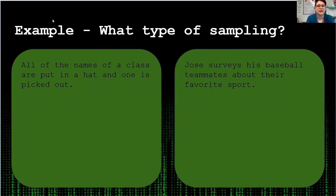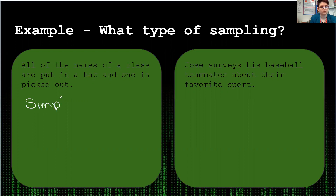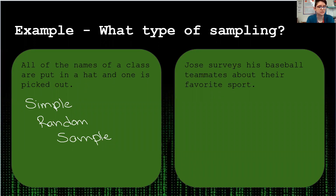Let's look at a few examples and determine what type of sampling was used. Our first example: all the names of a class are put into a hat and one is picked out. All the names of the class are represented, so the whole population is included. They're put into a hat and one is selected, so everyone has an equal chance. This is a simple random sample — no one is controlling which name is picked and each person has a chance to be chosen.